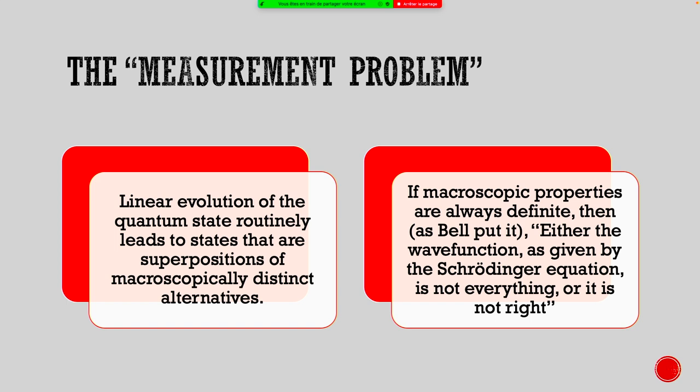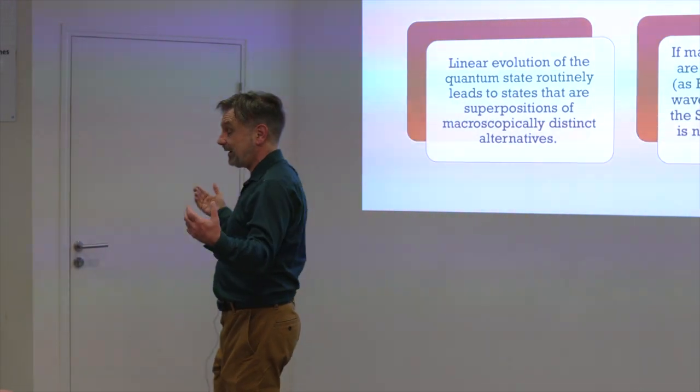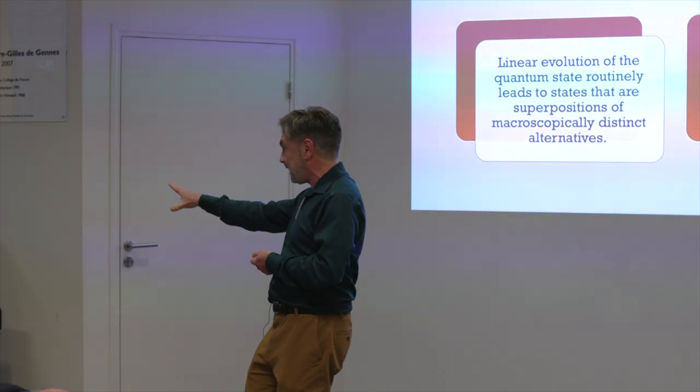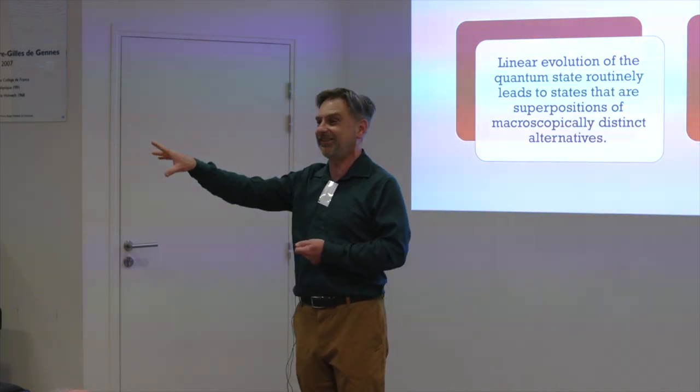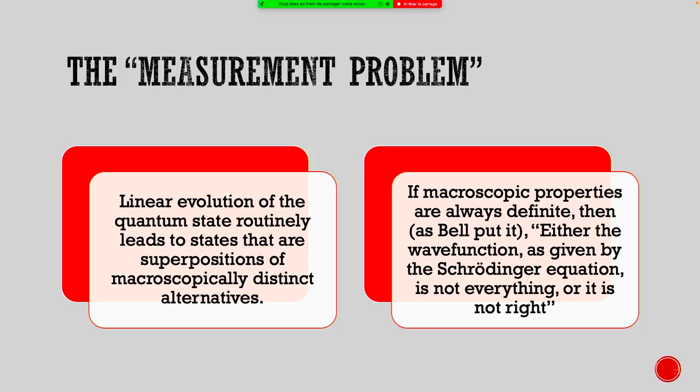Central problem is the measurement problem. Several people have discussed this already. And that's basically, if you think that the quantum state evolves linearly at all times, it leads to states of superpositions of macroscopically distinct alternatives. Sometimes people say that that is inconsistent with our experience, but if you say I never see a piano in a superposition here and there, you first have to tell me, what would it be like to see a piano in a superposition of here and there? And I think the problem is that it doesn't even seem to make sense at first.